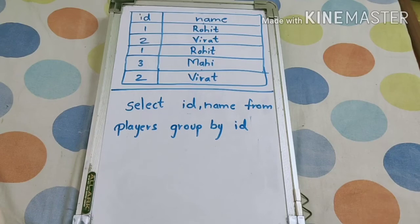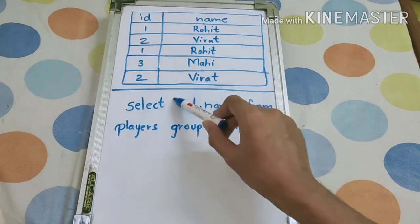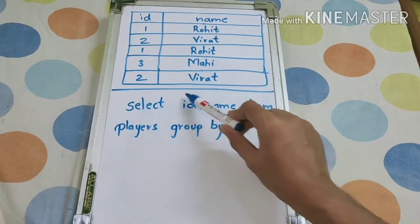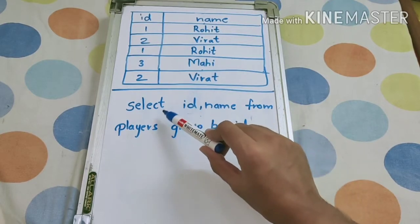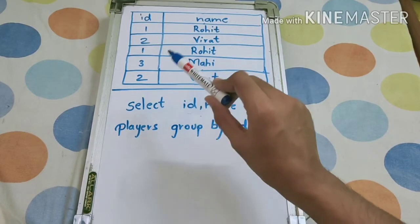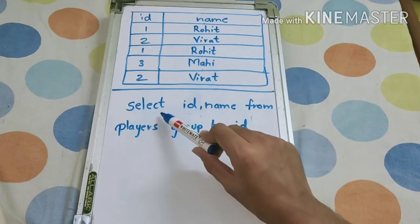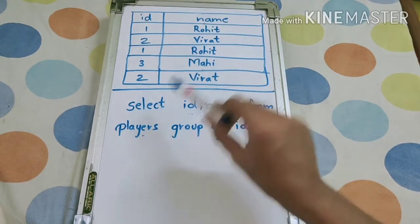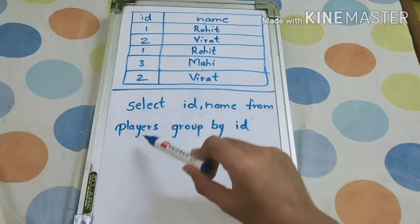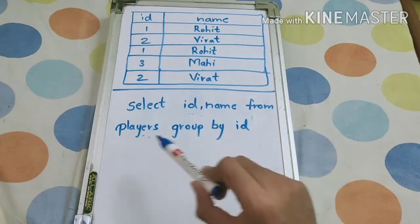First, we have to write a SELECT query: SELECT id, name — this is optional, depends on which columns you want to print. I'm printing both id and name, so I've written SELECT id, name FROM players. Let's assume this table name is players. Then GROUP BY id.